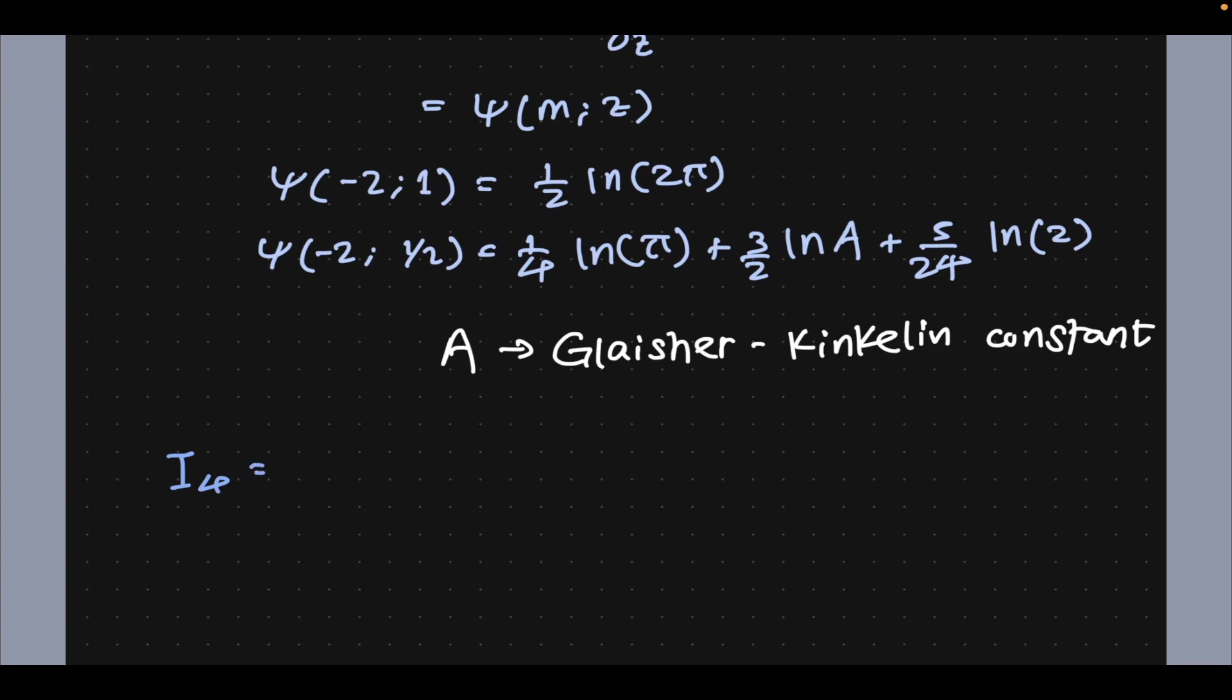So I4 is just simply the balanced polygamma(-2, 1) minus balanced polygamma(-2, 1/2), whose values we've noted, precisely: 1/2 natural log of 2π minus 1/4 natural log of π.